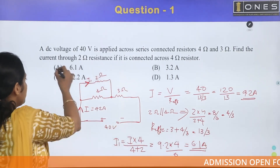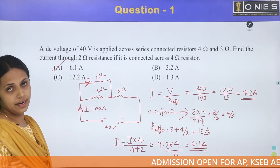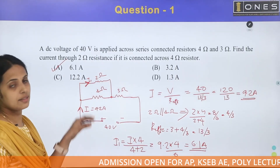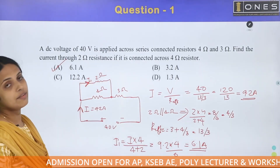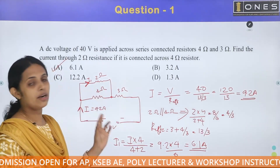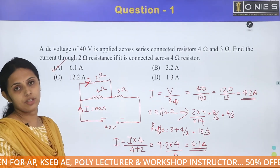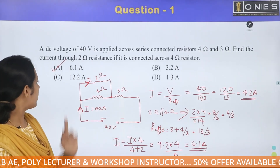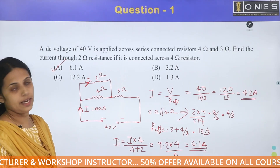The answer is approximately 6.1 amperes, which is Option A. The method used was to first calculate the effective resistance, then find the net current, and finally apply the current division rule to get the current through the 2 ohm resistor.